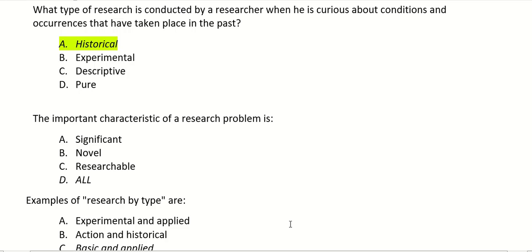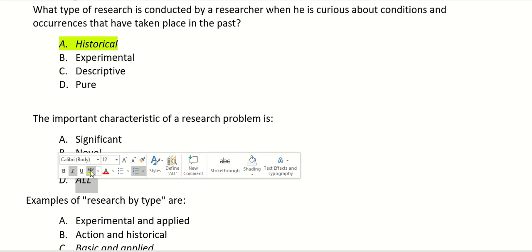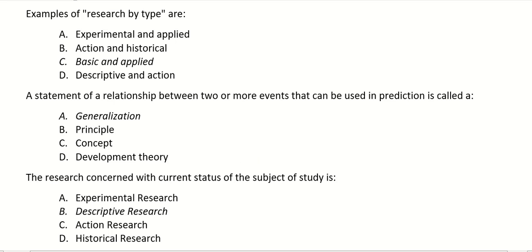The important characteristics of a research problem are: significant, novel, and researchable. All three characteristics are the right answer. Examples of research by types include: experimental and applied, action and historical, basic and applied, or descriptive and action. The right answer is basic and applied.